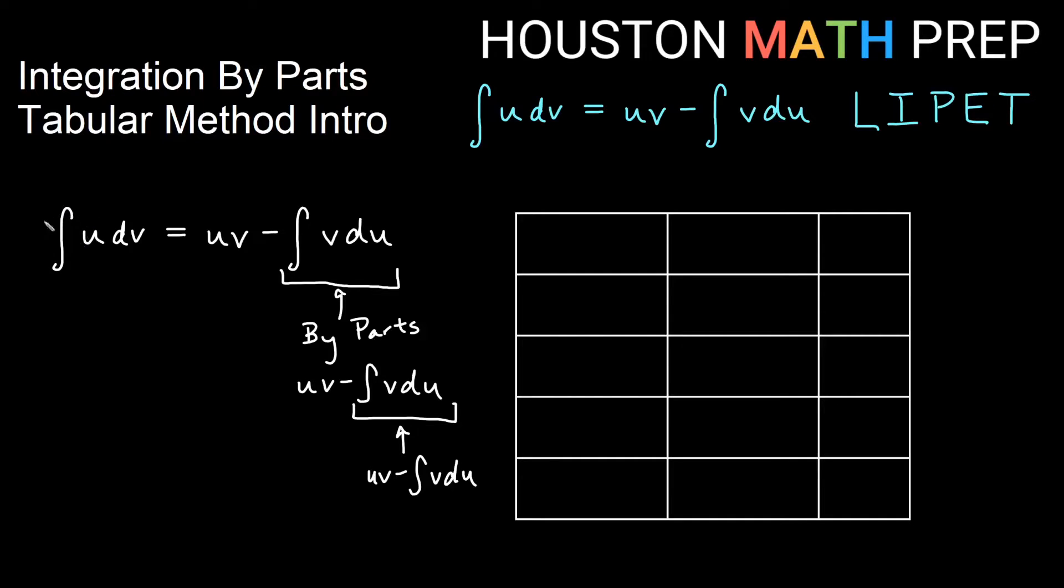So looking at the formula integral u dv, you'll notice u appears again, but then we also have du. And if I kept choosing a similar u based on my original u, I would keep taking the derivative of that thing at each step to be du in my formula. So we're going to have a column that is based on u, and we are going to differentiate that column.